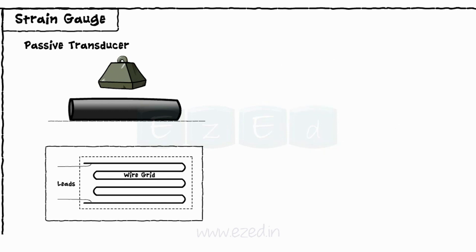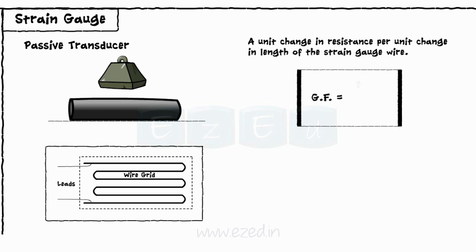The characteristics of the strain gauge are measured in terms of a gauge factor which is defined as a unit change in resistance per unit change in length of the strain gauge wire. It is given by a formula GF equals DR upon R upon DL upon L.